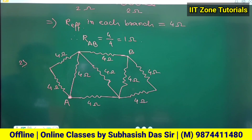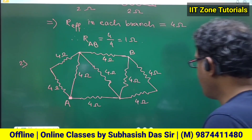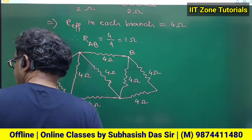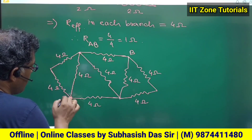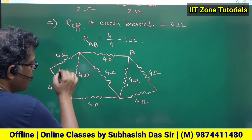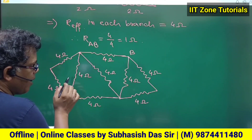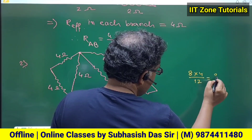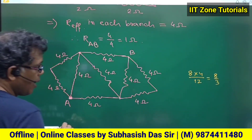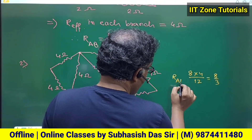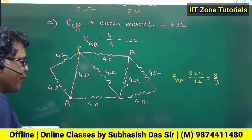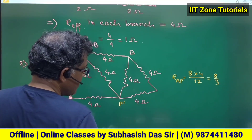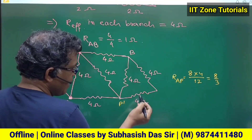What will be the effective resistance between A and B? First, these two resistors are in series: four plus four equals eight. Then eight and four are in parallel, giving eight times four divided by twelve, which is eight by three. I mark this intermediate point as P.